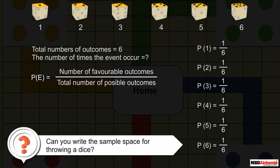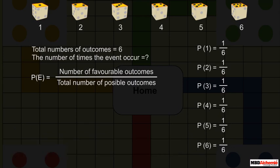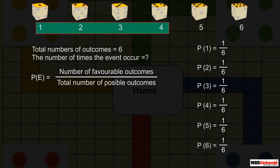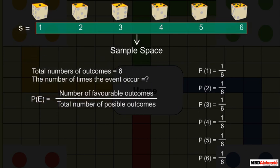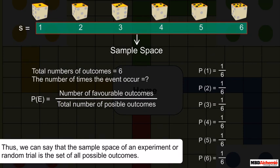Can you write the sample space for throwing a dice? As we know, the possible outcomes by throwing a dice are 1, 2, 3, 4, 5, or 6. These are called sample space and we name it as S. Thus, the sample space of an experiment or random trial is the set of all possible outcomes.